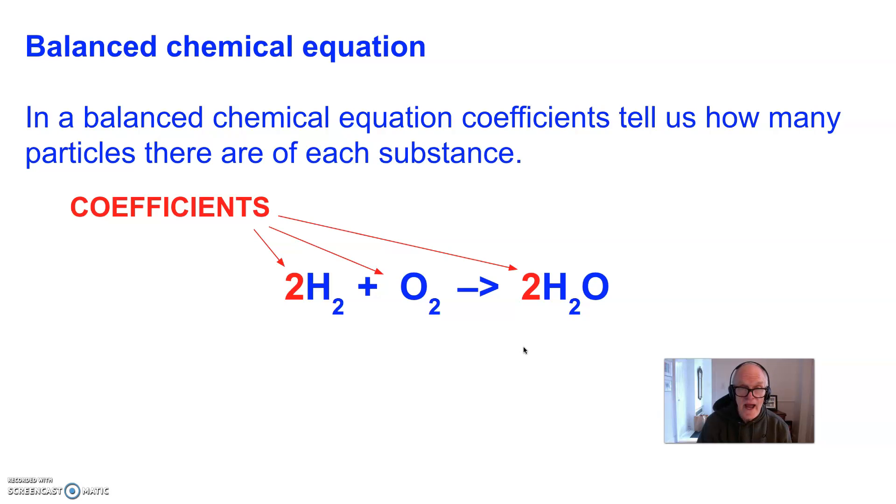During a chemical reaction, the number of particles is not exactly the number that is given in the balanced chemical equation, but it does tell us the relative numbers of particles. So for every two particles of hydrogen, it reacts with one particle of oxygen, and together they make two particles of water in this example.